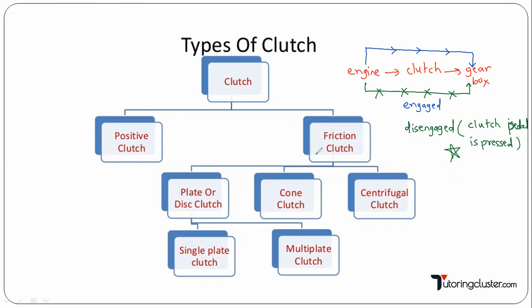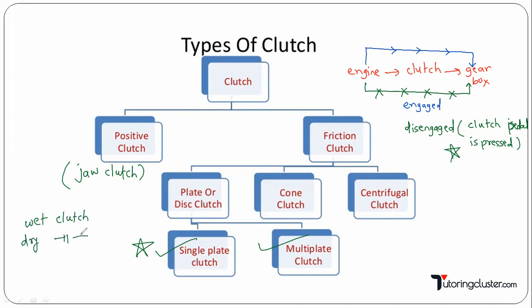There are two types of clutches: positive and friction clutches. A jaw clutch is an example of a positive clutch. Friction clutches can be plate or disc clutch, cone clutch, or centrifugal clutch. Plate or disc clutch can be further classified as single plate clutch and multi plate clutch. For first year students, the single plate clutch — its construction and working — is very important. Clutches can also be classified as wet clutch or dry clutch.